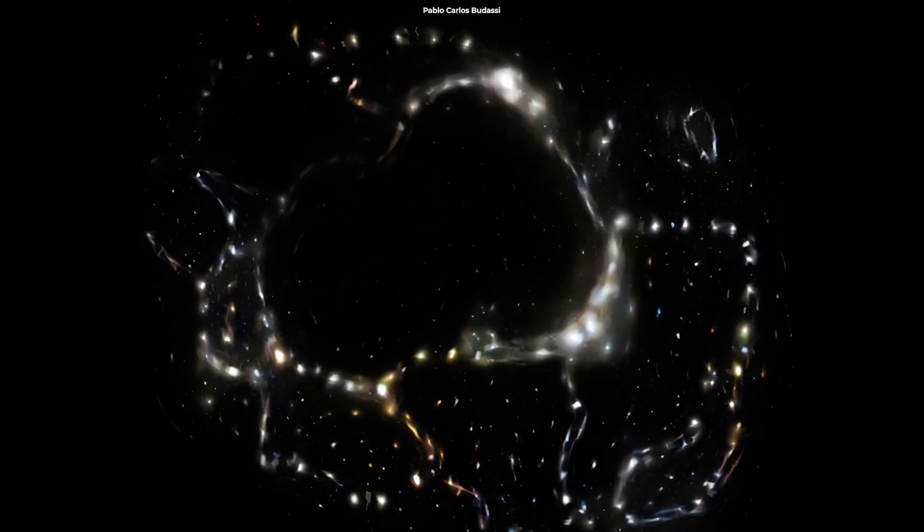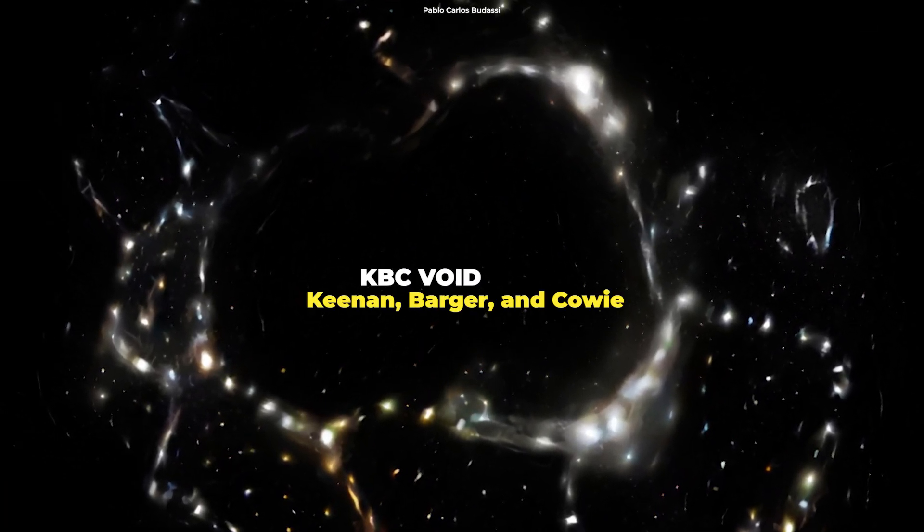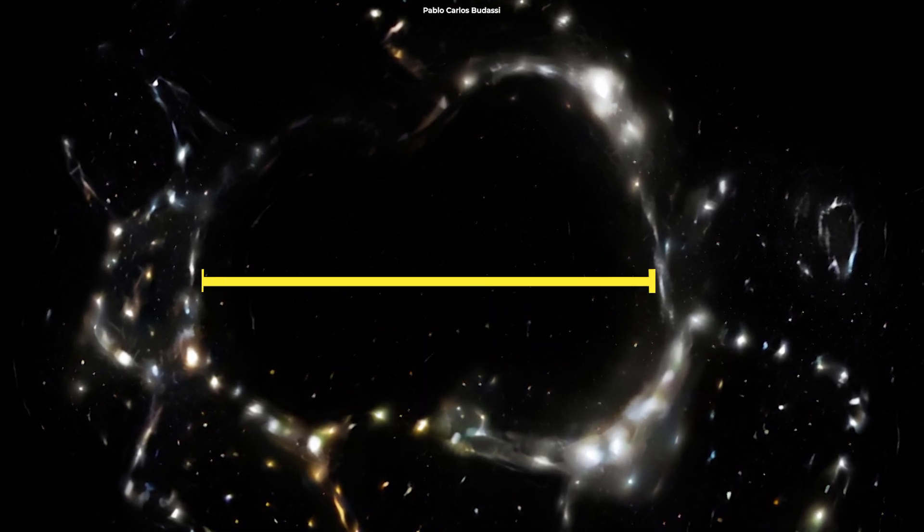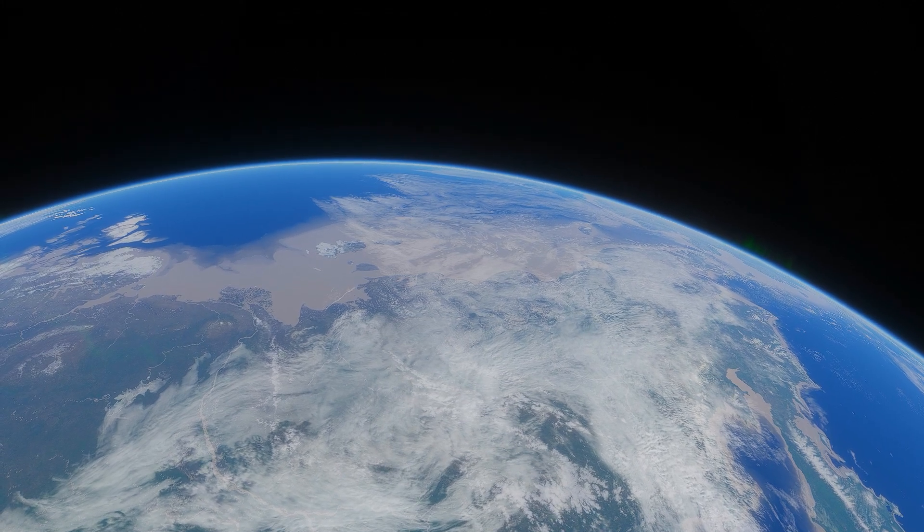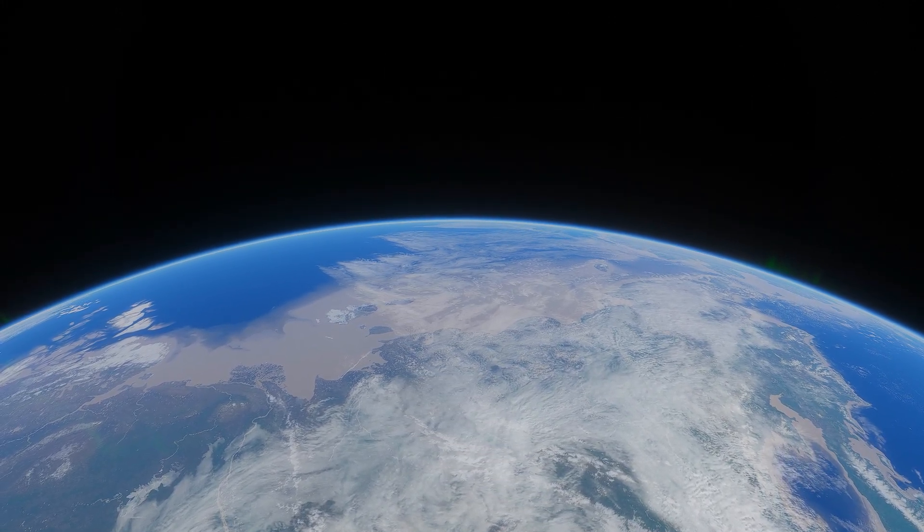On the other hand, the largest void is the KBC Void, short for Kenan, Barger, and Cowie. This loneliness has a diameter of 2 billion light-years. You would think that if we were part of such a void, our night sky would be truly dark. Well, let me tell you the mind-boggling story.